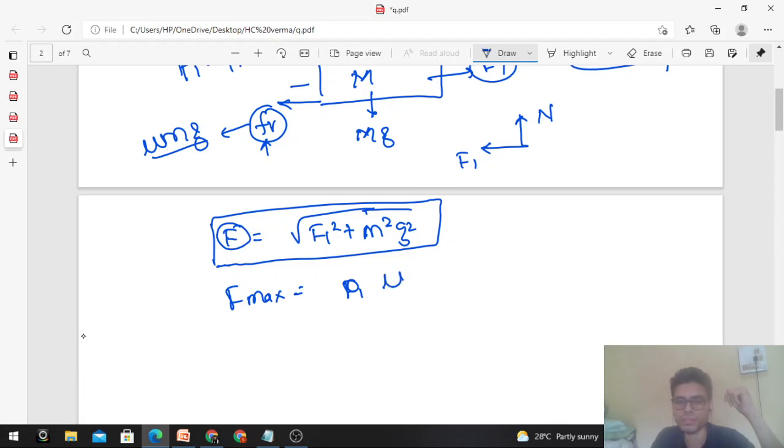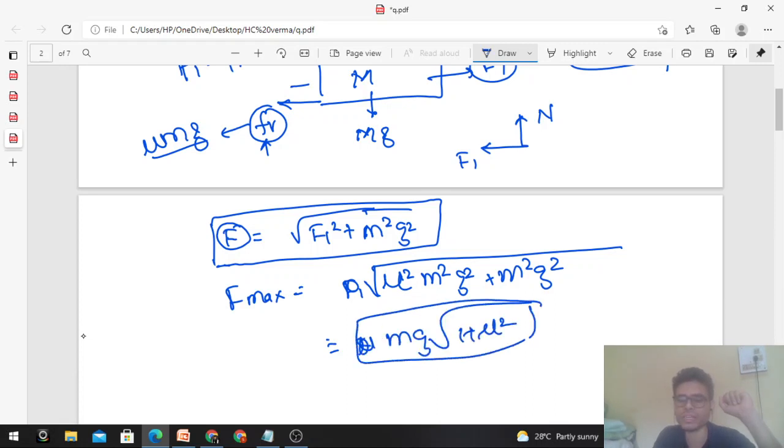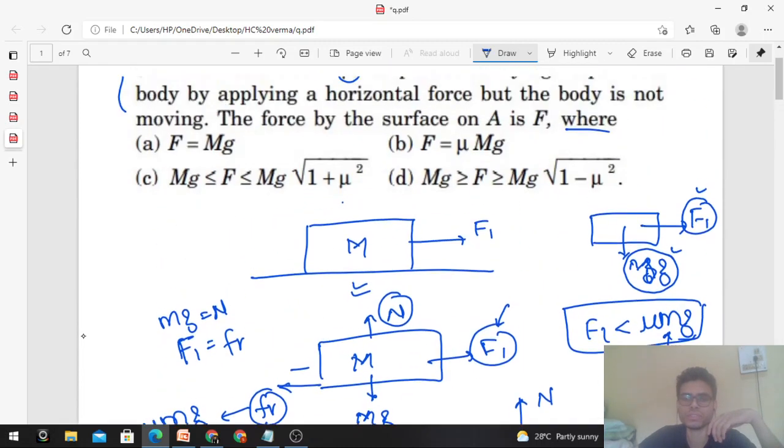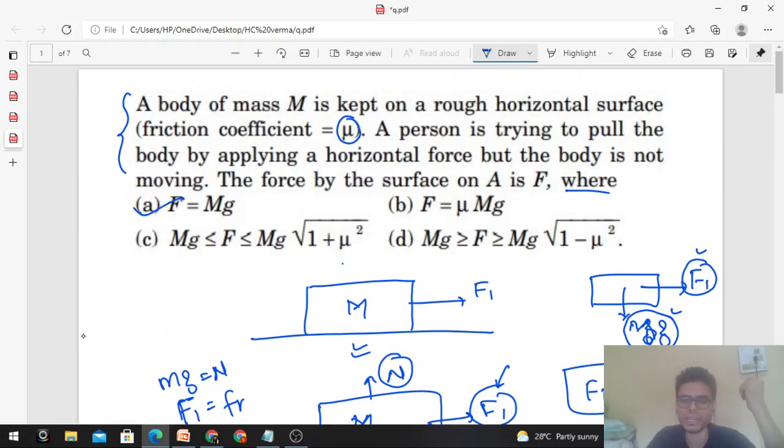This is the contact force. The maximum value of F1 will give the maximum contact force that the surface applies on the body. F_max will be Mg√(1 + μ²). Now you can easily see the options. If I talk about the first option, F = Mg? No, of course not.